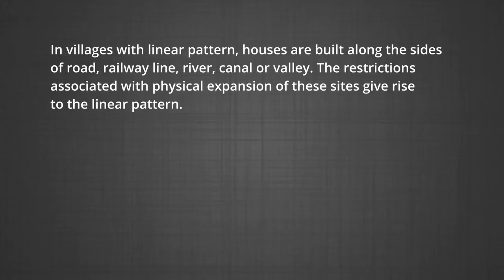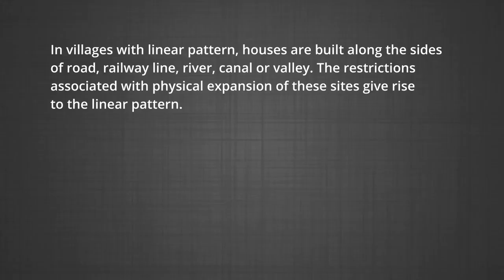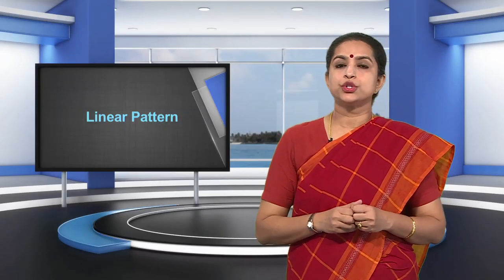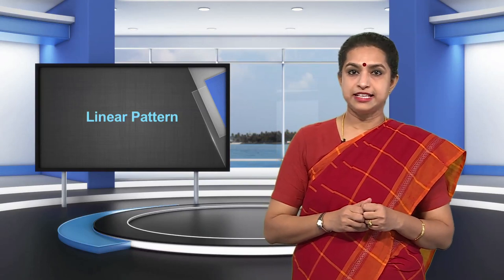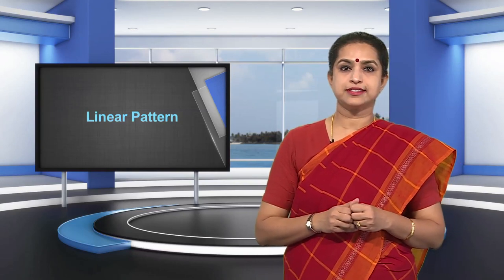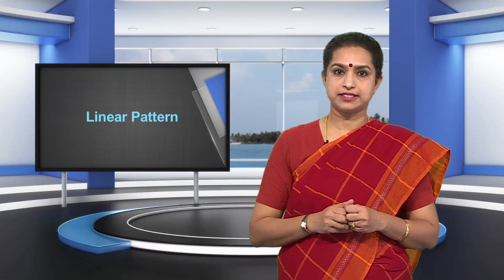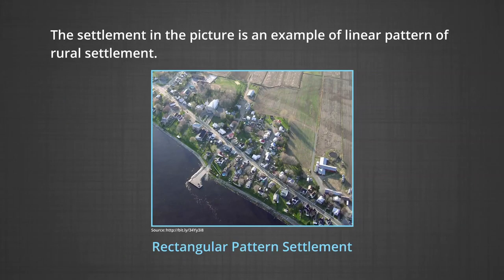Linear pattern: in villages with linear pattern, houses are built alongside a road, a railway line, a canal, or a valley. The restrictions associated with the physical spread of these sites give rise to a linear pattern. Settlements along the roads of the Ganga-Yamuna plain and in the valleys of the Alps and Rocky Mountains are examples of linear pattern.